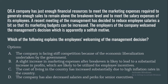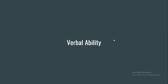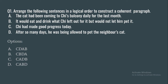The next section is verbal ability. Question 1: Arrange the following sentences in a logical order to construct a coherent paragraph. (A) The cat had been coming to Chee's balcony daily for the last month. (B) It would eat and drink what she left out for it but would not let him pet it. (C) She had made good progress today. (D) After so many days, he was being allowed to pet the neighbor's cat. Options: CDAB, CBDA, CADB, or CABD.